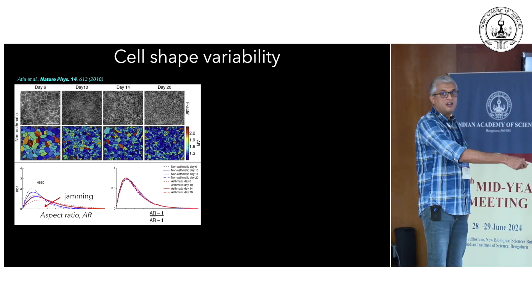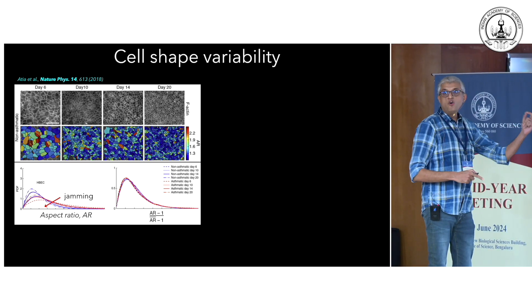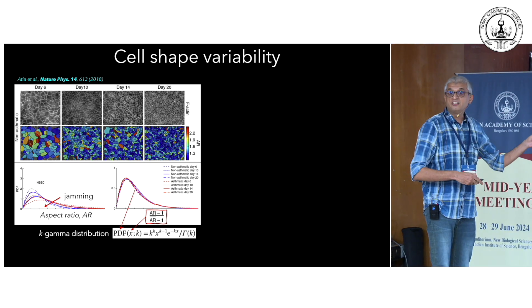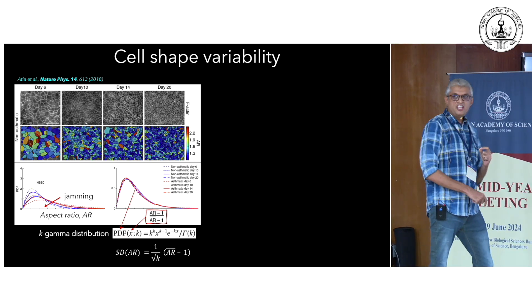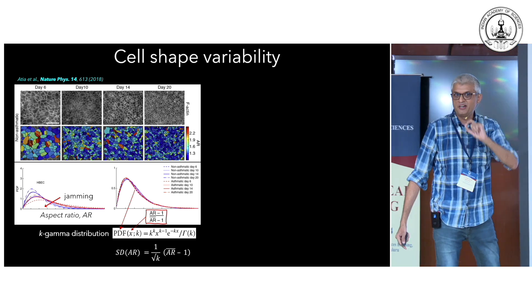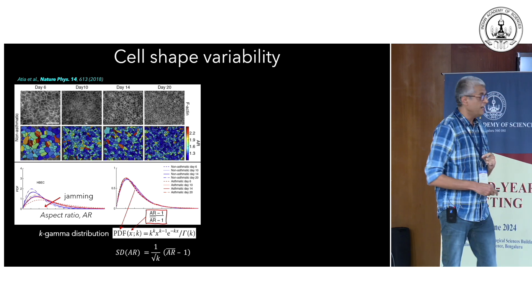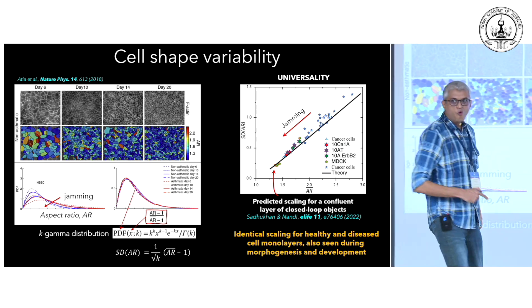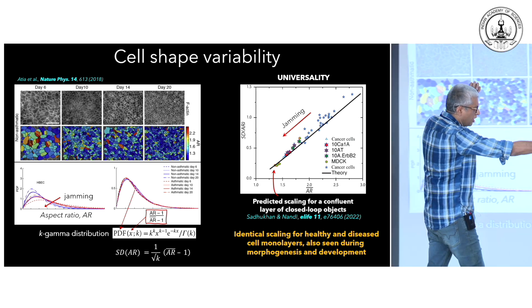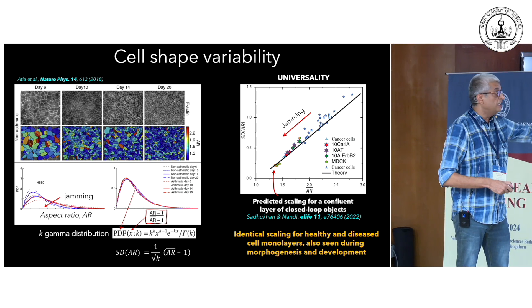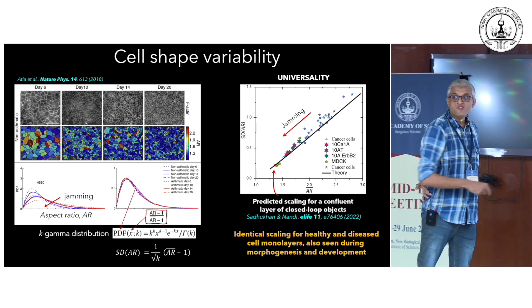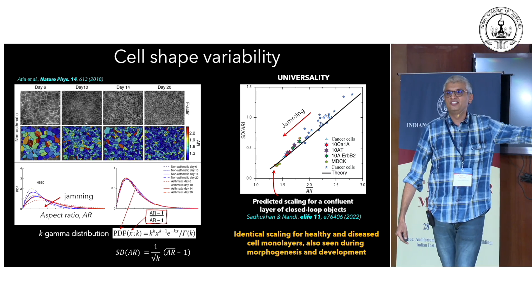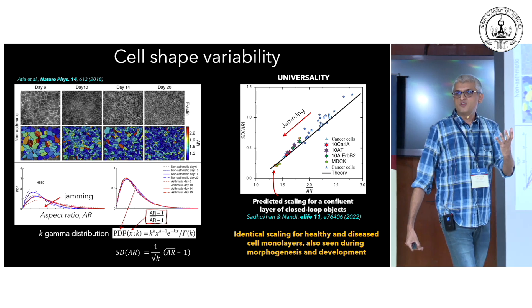You can rescale these distributions in a particular manner, and lo and behold, all of them collapse onto a single universal distribution called the K-gamma distribution. The interesting outcome is that the standard deviation of the aspect ratio has a very simple linear relationship with the mean aspect ratio. Plotting standard deviation versus mean aspect ratio, everything beautifully collapses onto a line — from cancer cells to canine kidney cells, and also during Drosophila embryogenesis. Jamming means you're moving down this line. This universal scaling tells you the variability is not random noise; there is meaning to it.